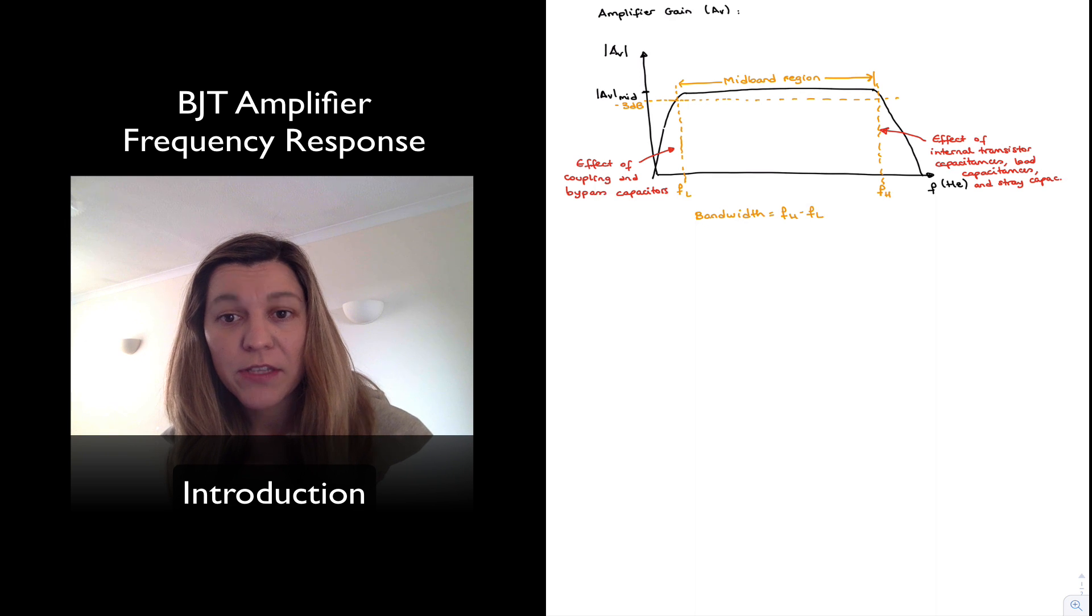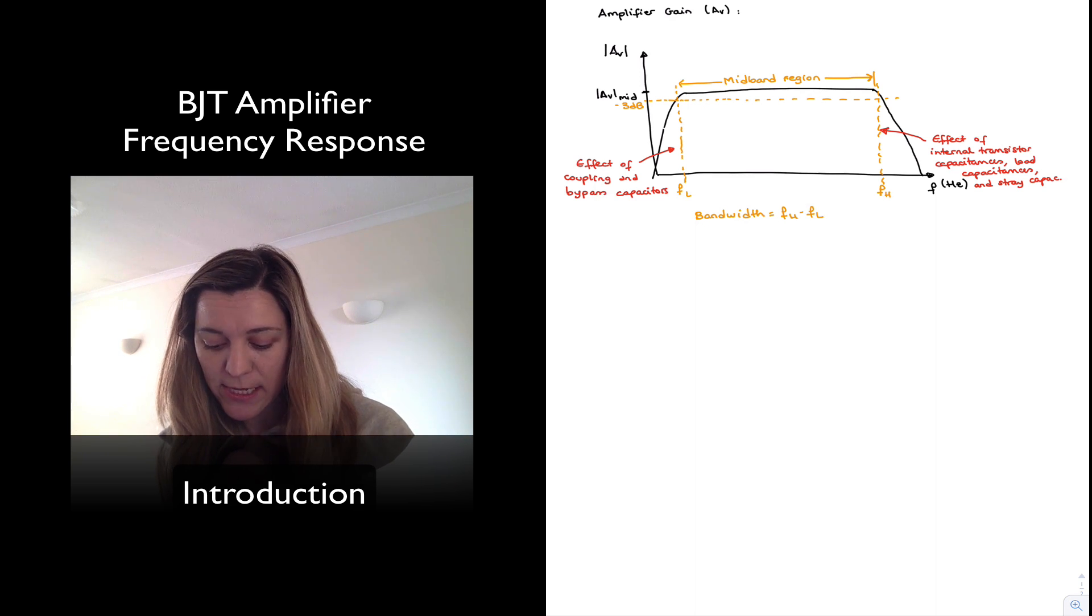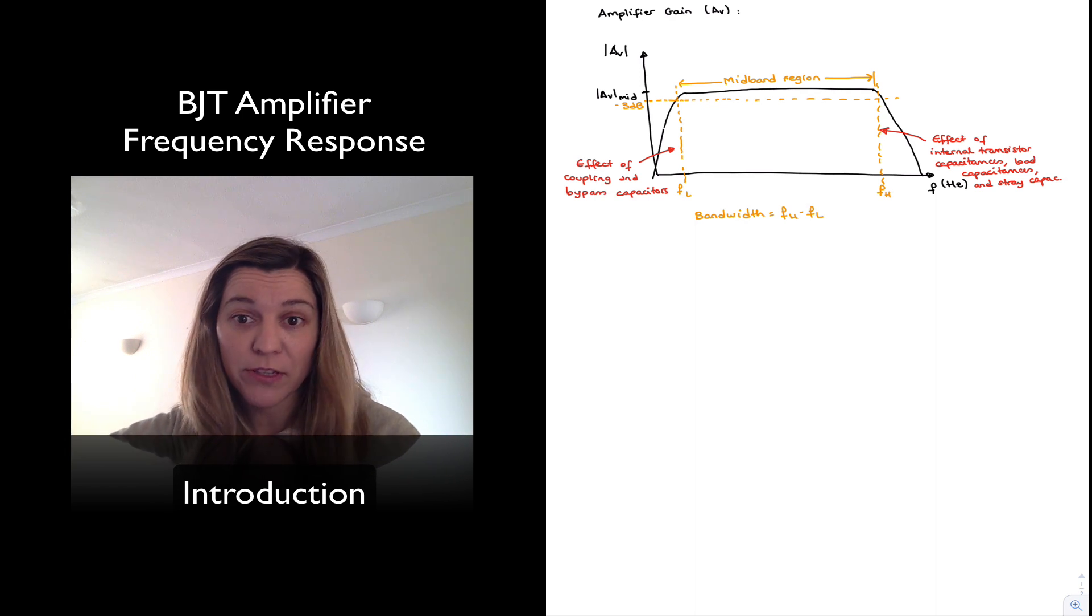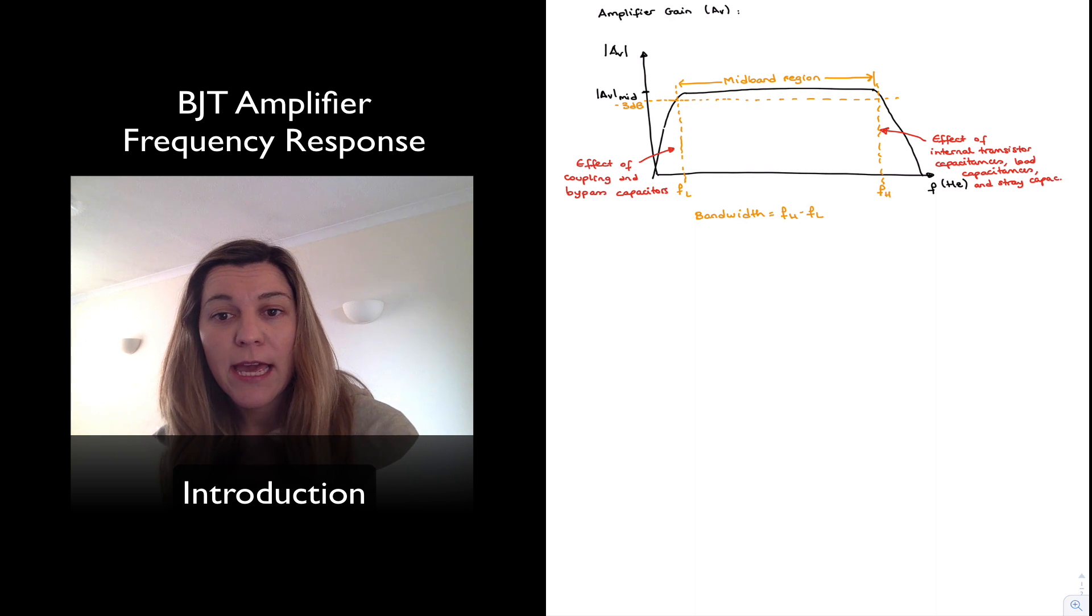And the reason why these capacitances cause such response is because, as we will see, the coupling and bypass capacitors form a high-pass filter type of response with the resistances that are connected to their terminals and the internal transistor capacitances as well as the load capacitances form a low-pass filter and so they produce a low-pass filter type of response with the resistors that are connected around them.